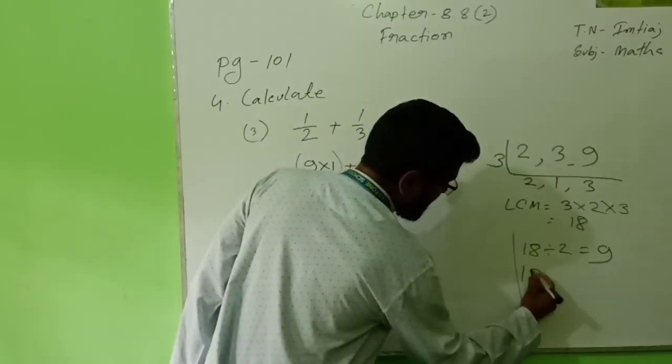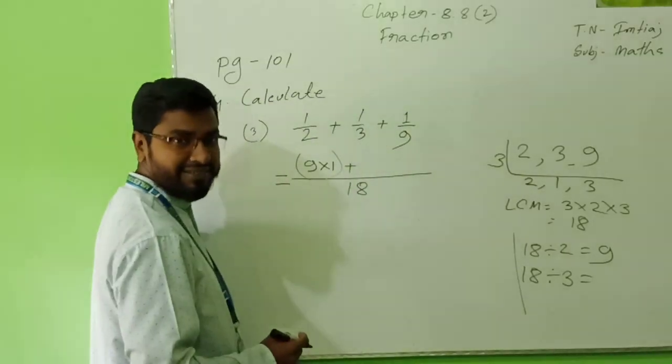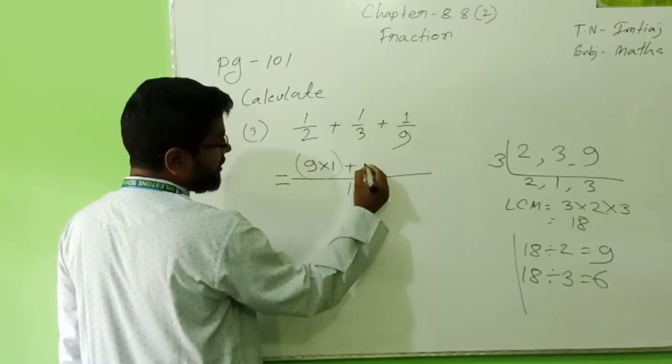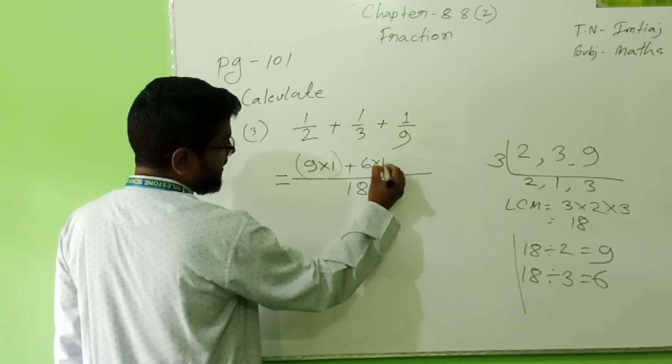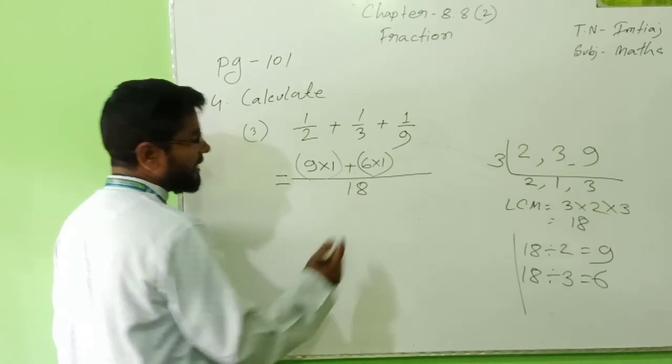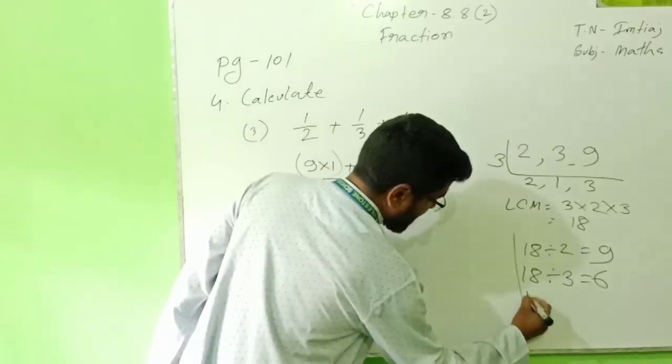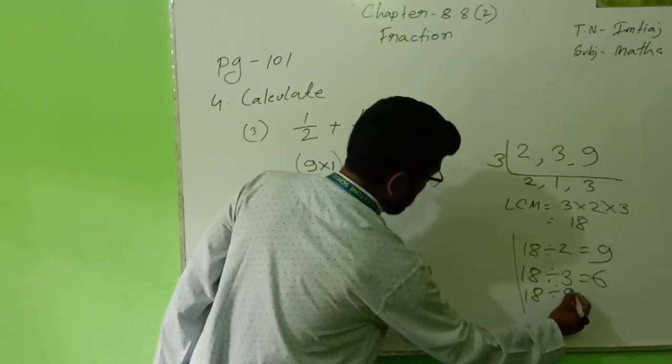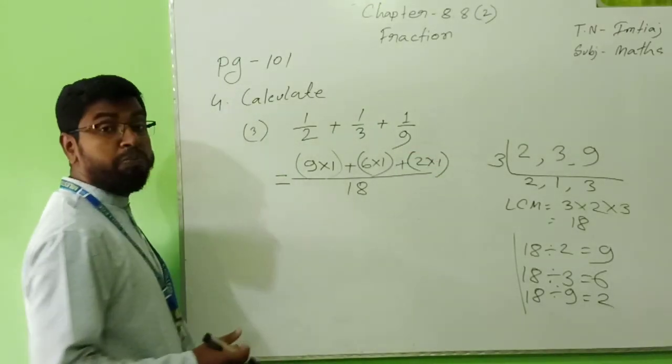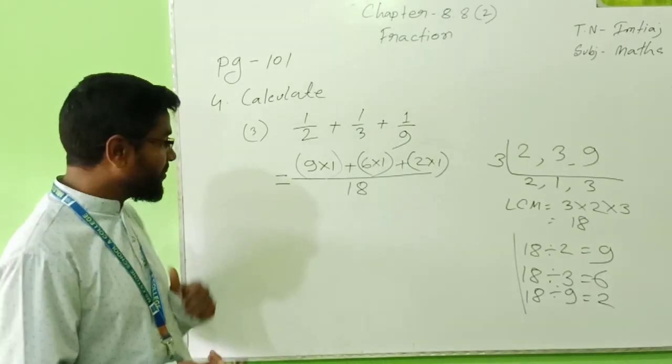Then, class, for the second fraction, 18 divided by 3, what will we have? Yes, 6. That 6 I will multiply with numerator. Look, numerator is 1. Look, 3 times 6 is 18. Then, for the next one, 18 divided by 9, it becomes 2. That 2 will multiply with 1. See, main process already you have done. Now calculate.